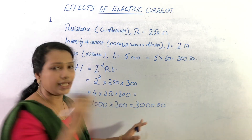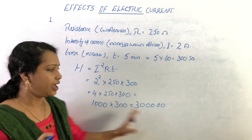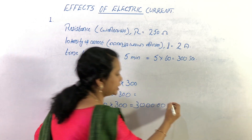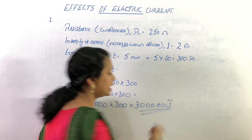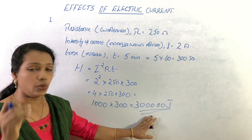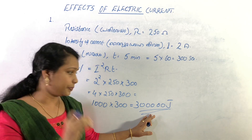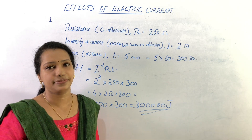The result is 3 lakh joules, that is 300,000 joules. This is the answer to Question 1.